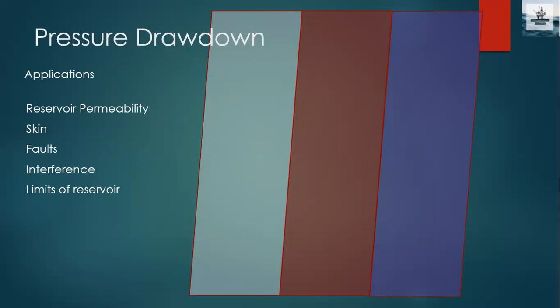Drawdown represents the change in pressure between reservoir pressure and wellbore pressure. While conducting the pressure drawdown test, we analyze production when there is a drawdown pressure — that is, the difference between reservoir pressure and wellbore pressure. Applications of this test include estimating reservoir permeability, skin effect, faults, interference, and the limits of the reservoir.